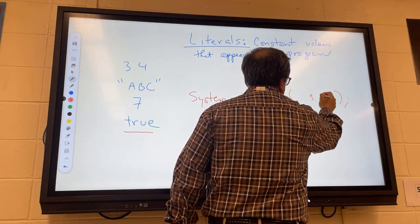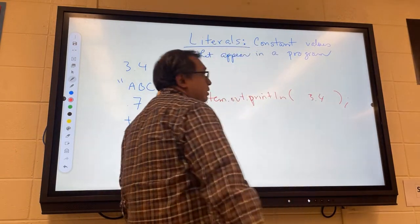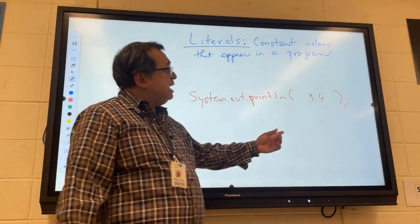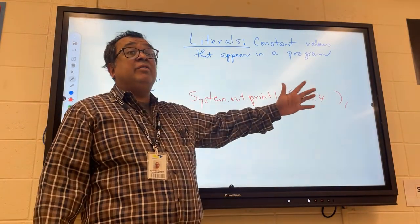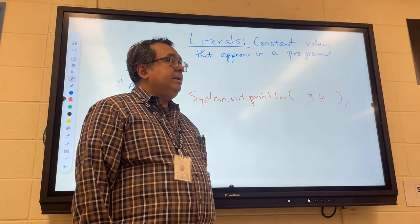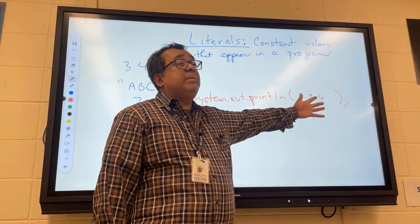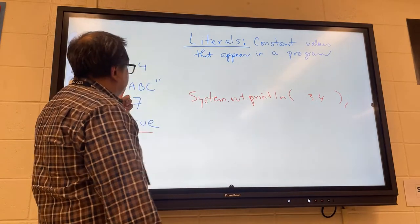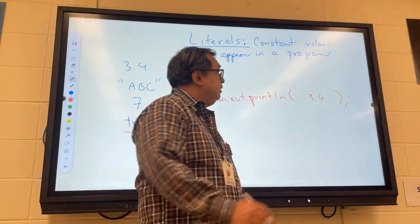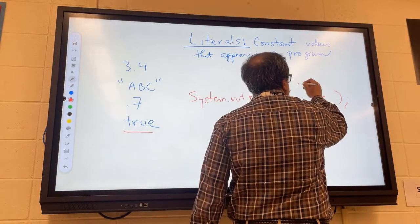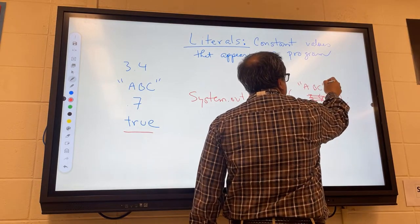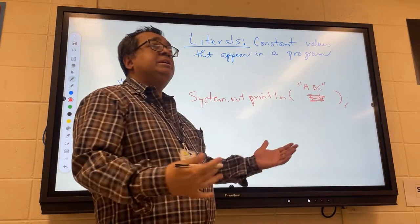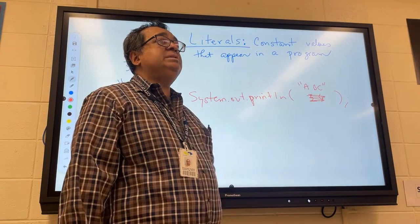So if you put 3.4 here, the compiler knows how to take the 3.4 and convert it into the string 3.4 and print it. Similarly, if you were to take ABC and put it here like this, that of course is already a string, so it doesn't have to convert it to a string, it just prints it.